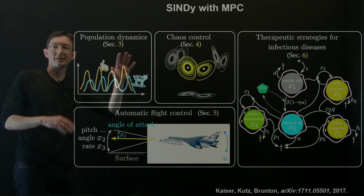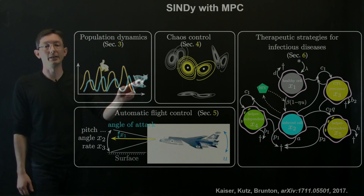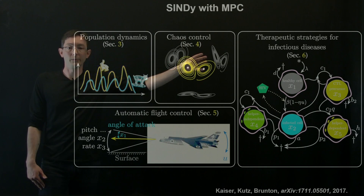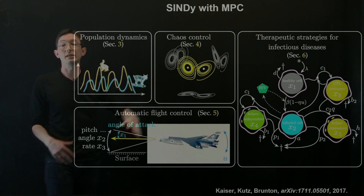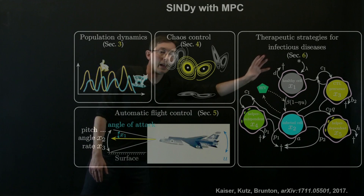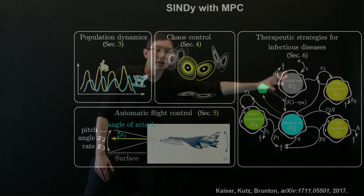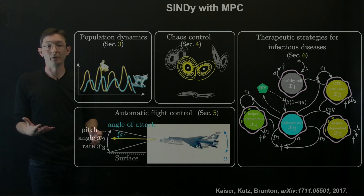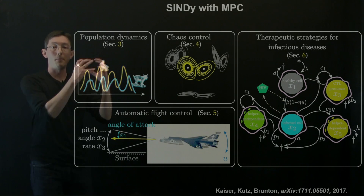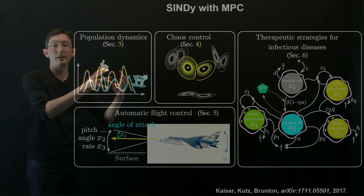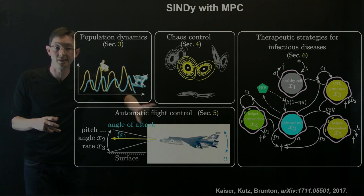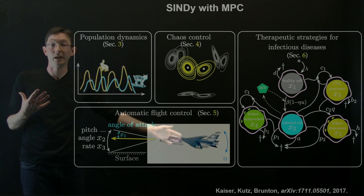Erika has applied this to many different systems: the predator-prey model, the chaotic Lorenz system, flight control of a fighter jet, and HIV suppression in an HIV model. So you can use this data-driven model discovery and model predictive control framework in all of these examples — you can read about it in her archive paper.